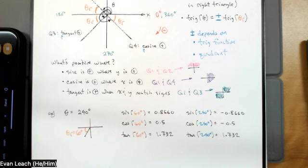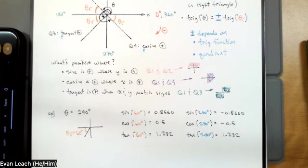In problem two, you find sine, cosine, and tangent by getting the value from the reference angle and determining the sign from the quadrant. We want to make sure we can figure out the reference angle and quadrant, and check that our answers are correct.